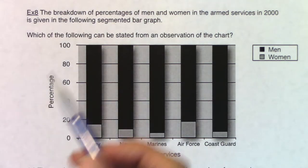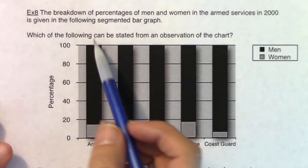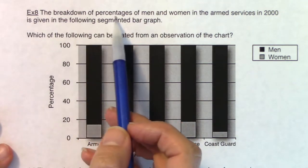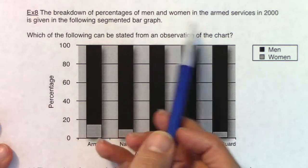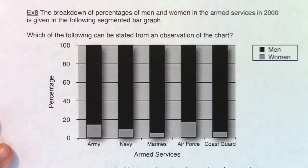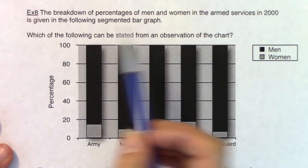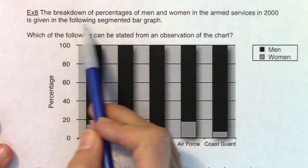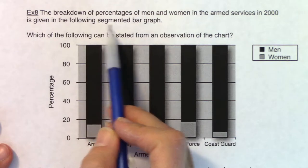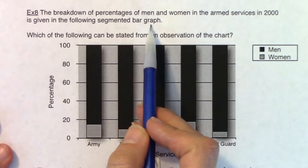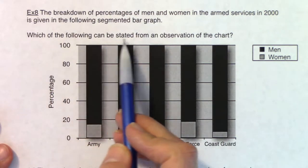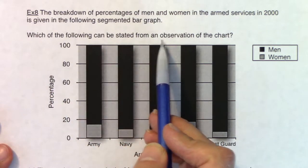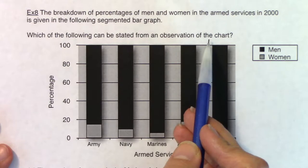For example eight, we have the breakdown of percentages of men and women in the armed services in the year 2000, given by the following segmented bar graph. Which of the following can be stated from an observation of the chart?